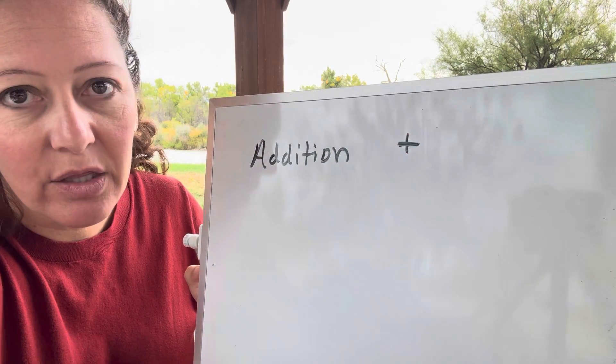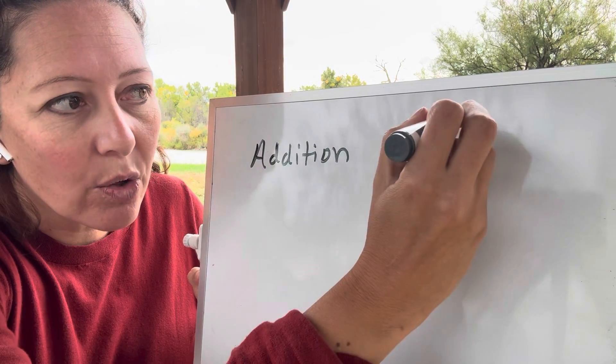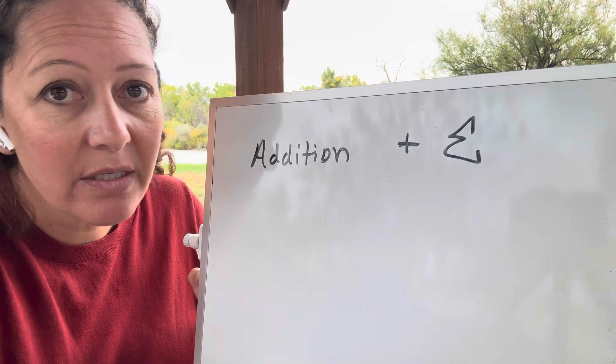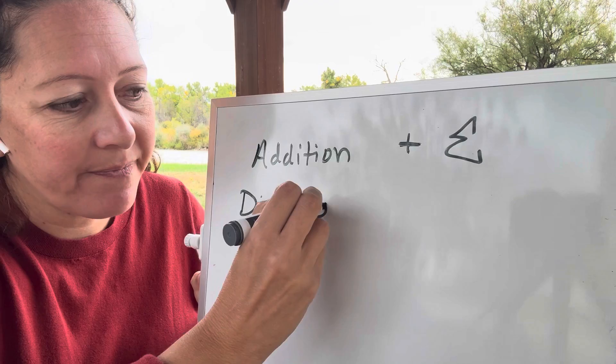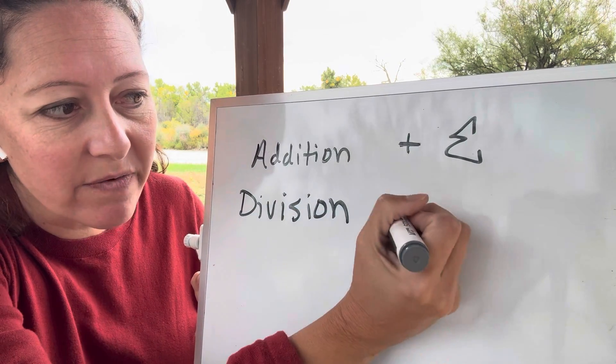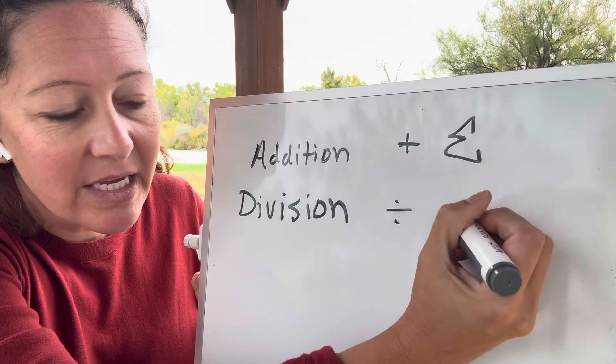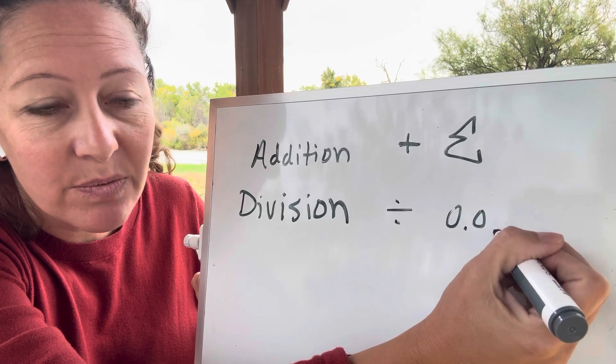So they should know that when we are talking about addition, we could be looking at a plus symbol or we could be looking at summation because that's addition as well. So like I was talking about four examples on division, they should know division is like this.